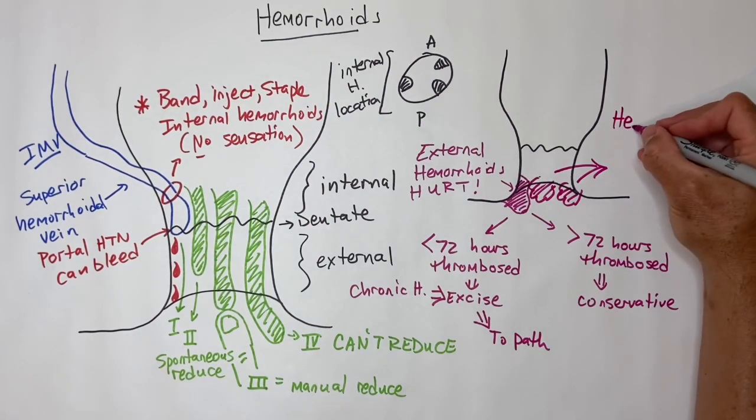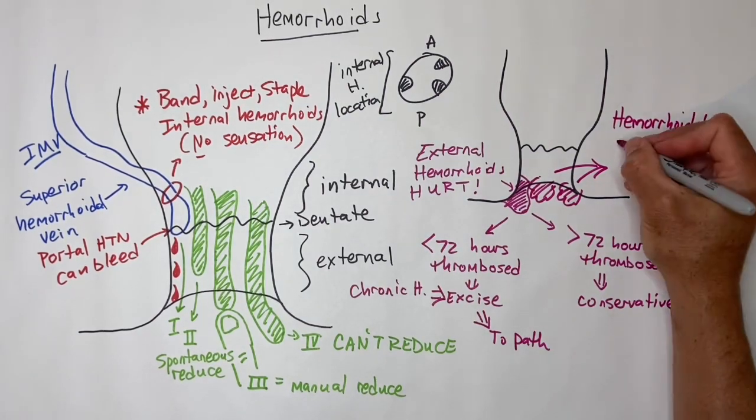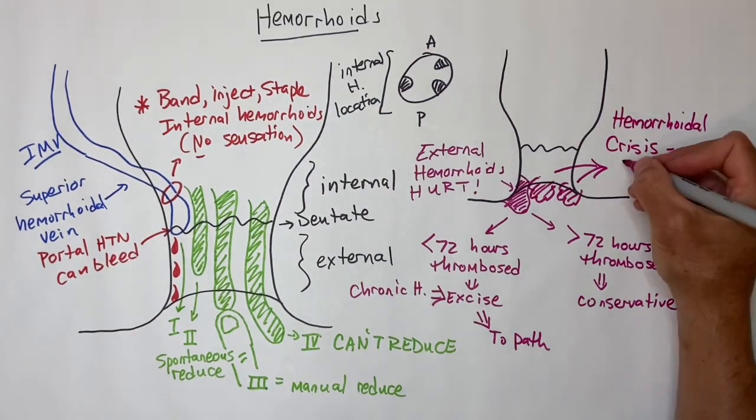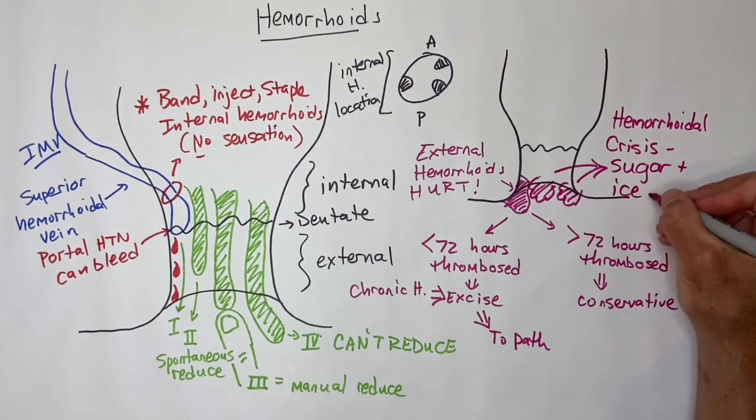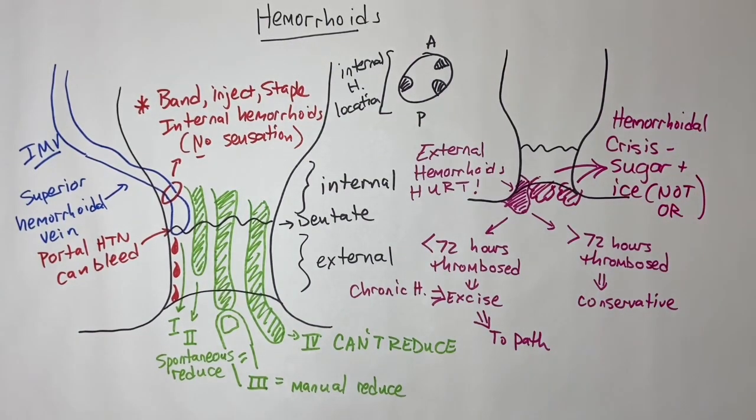In external hemorrhoidal crisis, which are engorged, prolapsed, and strangulated circumferential external hemorrhoids, apply sugar and ice packs in 15-minute intervals with a goal to reduce. Sometimes you may even need paralysis under anesthesia to achieve this, but do not operate acutely. You will end up excising too much tissue and can cause anal stenosis. Recently, hyaluronic acid has also been used successfully.